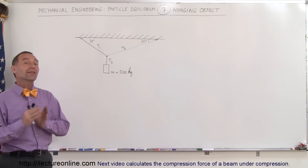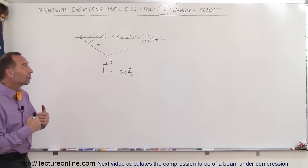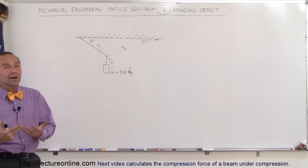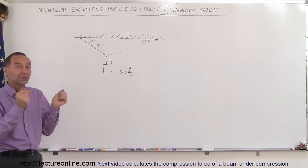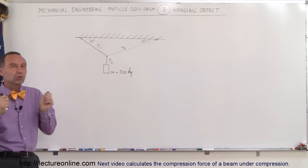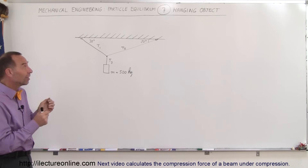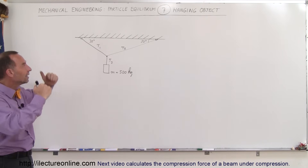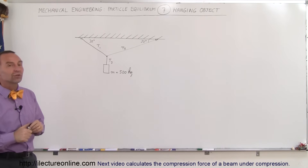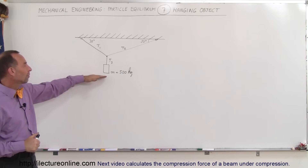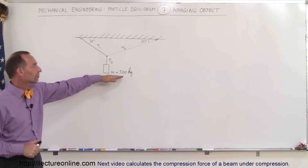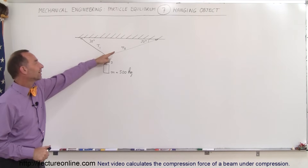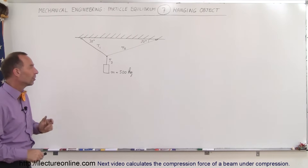Welcome to Electron Online. In this example we're seeing something fairly common: an object suspended from two cables making different angles with the ceiling. The mass of the object is 500 kilograms and we're trying to find the tension in each of the three cables.